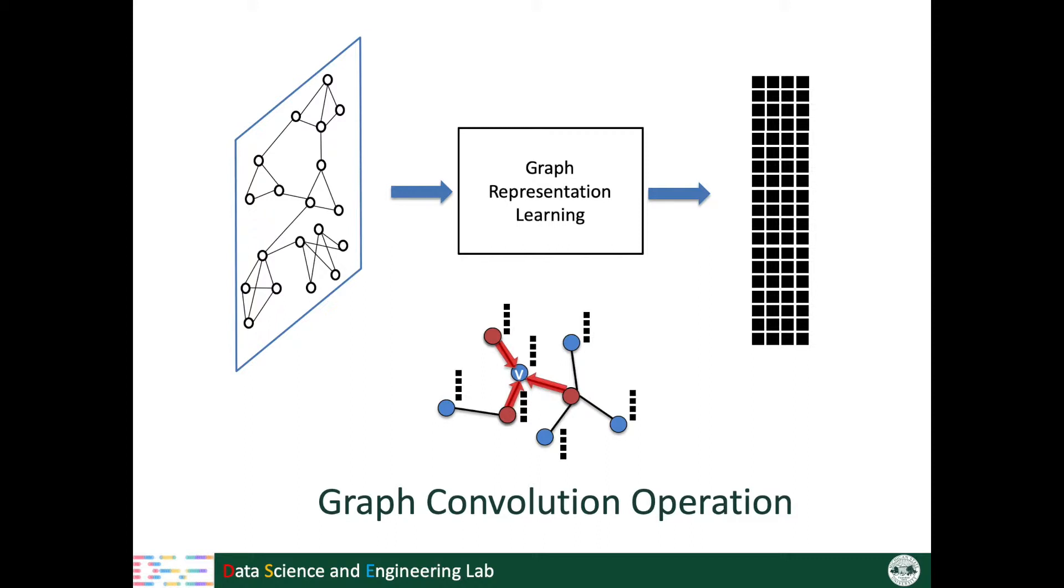Usually, the outputs of the graph convolutional operation are node representations which can be used for tasks such as node classification and link prediction.